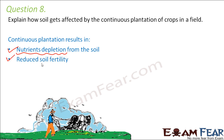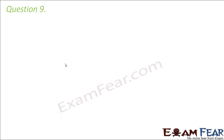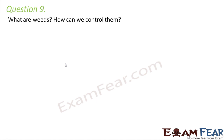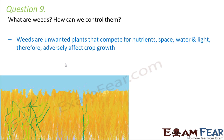With no nutrients remaining, the soil fertility will also reduce. These are the two major impacts of continuous cropping: soil fertility decreases, and there is a lack of nutrients in the soil. These are the two major impacts if we continuously cultivate crops in a particular field.